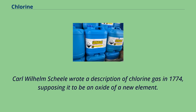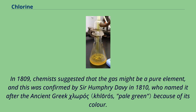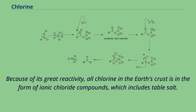Carl Wilhelm Scheele wrote a description of chlorine gas in 1774, supposing it to be an oxide of a new element. In 1809, chemists suggested that the gas might be a pure element, and this was confirmed by Sir Humphrey Davy in 1810, who named it after the ancient Greek word for its color. Because of its great reactivity, all chlorine in the Earth's crust is in the form of ionic chloride compounds, which includes table salt.